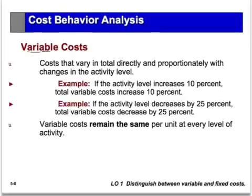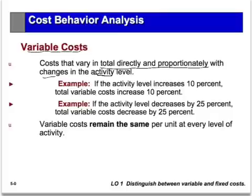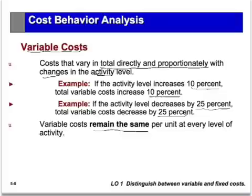Some costs can be classified as variable costs. Variable means that they will change in direct proportion to the change in activity. For example, if we increase sales 10% and this cost goes up 10%, we classify it as a variable cost. Conversely, if the activity level goes down 25%, this cost will also go down 25%. However, variable costs remain the same on a per unit basis.